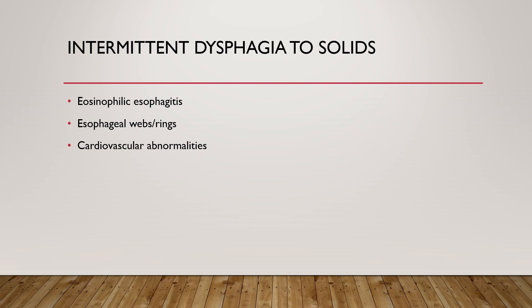If dysphagia is intermittent and to solids, the differential includes eosinophilic esophagitis. On endoscopy, eosinophilic esophagitis shows stacked circular ring formation, linear furrows, and whitish papules which are eosinophilic microabscesses. A small caliber esophagus is also a finding. On esophageal biopsy, you will see more than 15 eosinophils per high-power field. Esophageal webs or rings are associated with iron deficiency, seen in Plummer-Vinson syndrome, and are associated with low MCV anemia and dysphagia.